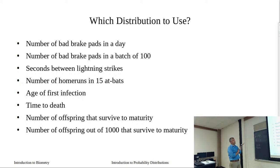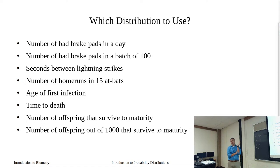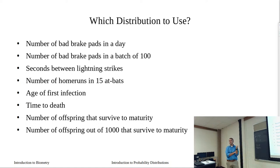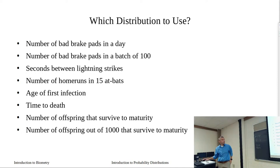We asked a question about number of bad brake pads that come off an assembly line in a day. We're at an assembly line, we're producing brake pads, and at the end of the day you get a report: X number of pads came off and there was a problem with them, so we didn't package them. What distribution models that first one — binomial or Poisson?